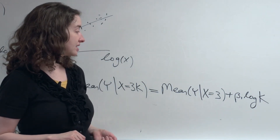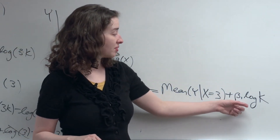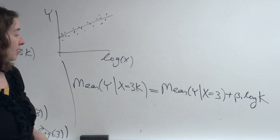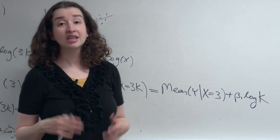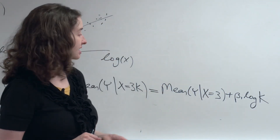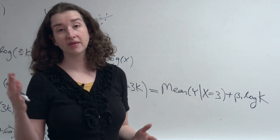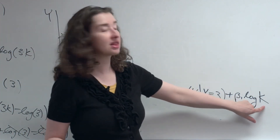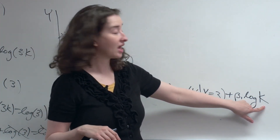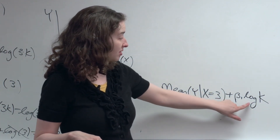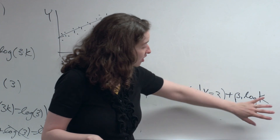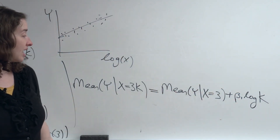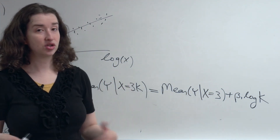If we're interested in what happens when x is multiplied by 3, we take our estimate of the slope and multiply by log of 3 — that's the amount the mean of y goes up by when x is multiplied by 3. And just as we did in the previous context, we can note that we have an interval for the slope — a lower bound and an upper bound for beta 1. If I take the lower bound and multiply by log of 2 or log of 3, whatever value of k I'm interested in, and I take my upper bound and multiply by log of 2 or log of 3, I'll get lower and upper bounds for the amount by which the mean of y changes when x is multiplied by k.